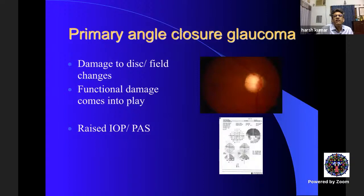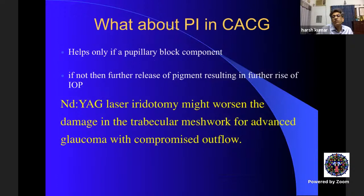In primary angle closure glaucoma we may have to do PI, but in chronic angle closure, if there is a pupillary block component, yes. However, if the entire angle is closed, doing iridotomy only releases further pigment, which blocks the meshwork further and may elevate pressure — which we do not want. In plateau iris, the first step is always iridotomy.